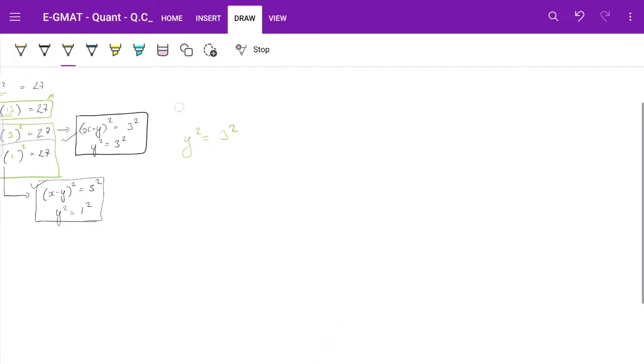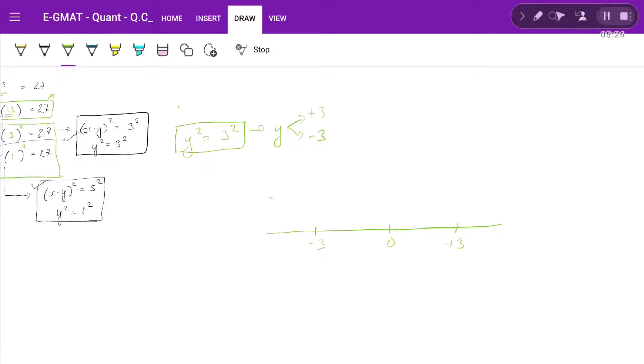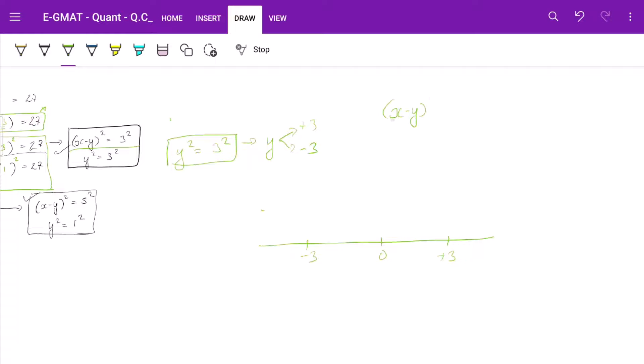See, y² = 3². What does this mean? This means that either y is plus 3 or y is minus 3. So let us draw a number line where we will put 0 here, minus 3 here and plus 3 here. Now understand the significance of this equation. (x - y)² = 3². What does this mean? It basically means that the difference between x and y on the number line is of 3 units. It can be on either side. Say for example, if x is here, y can be x plus 3, y can also be this side as x minus 3. Anything can happen. But the only truth is that their absolute distance on number line is 3 units.